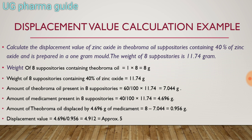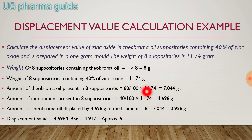Amount of theobroma oil present in 8 medicated suppositories: since 40% is medicament, 60% is suppository base, so 60/100 × 11.74 = 7.044 gram. Amount of medicament (zinc oxide) present in 8 suppositories: 40/100 × 11.74 = 4.696 gram.